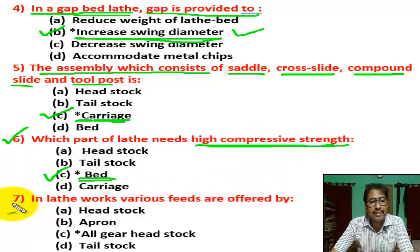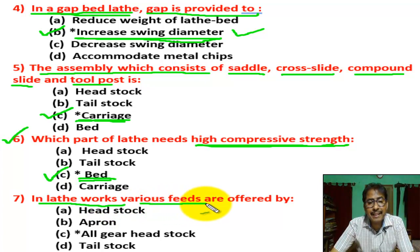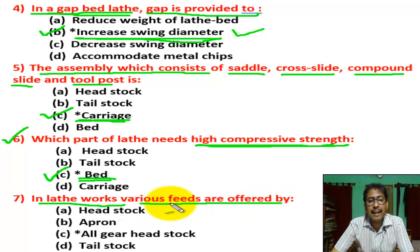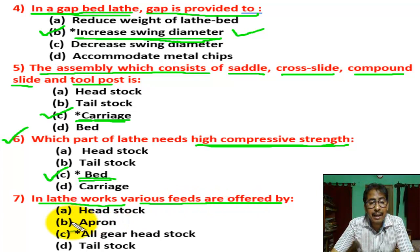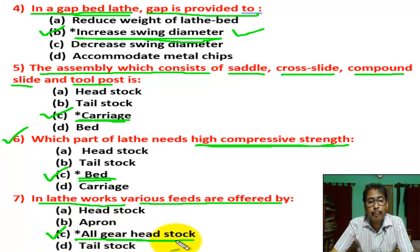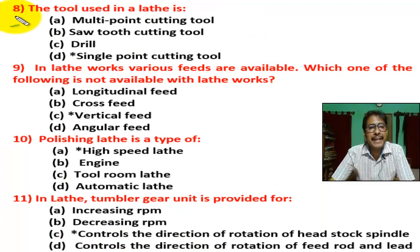Question number seven: in lathe work, various speeds are offered by? There are four options. Correct answer is C — all gear headstock. Various speeds are offered by the all gear headstock.